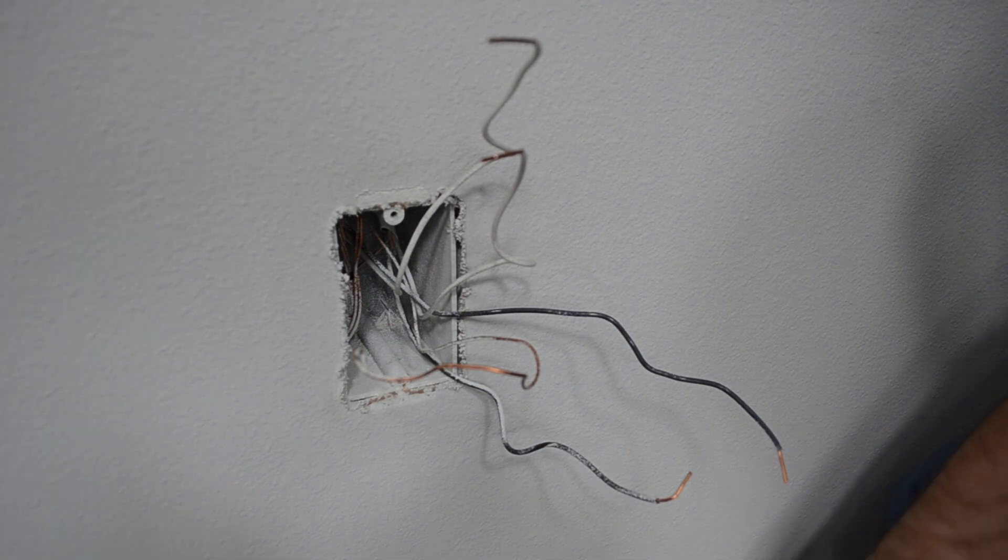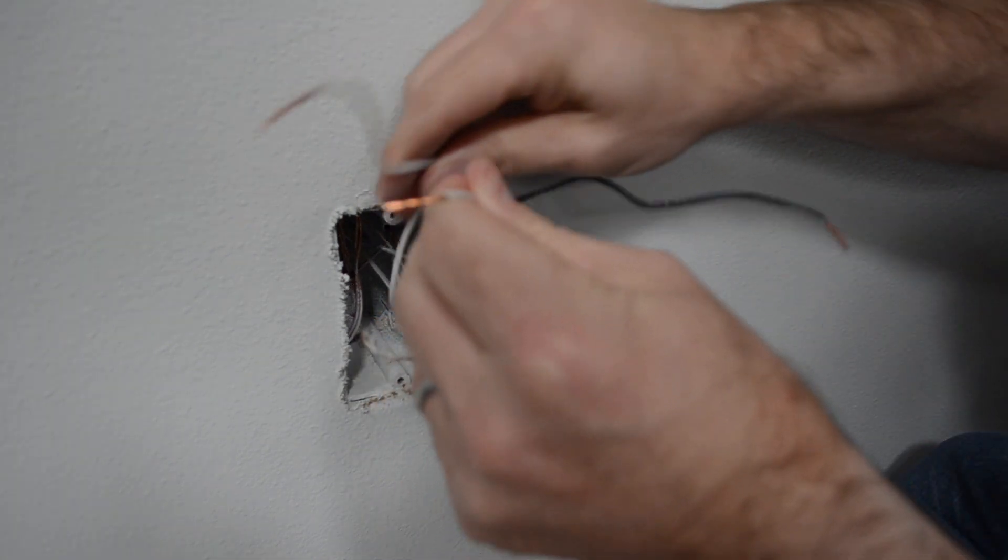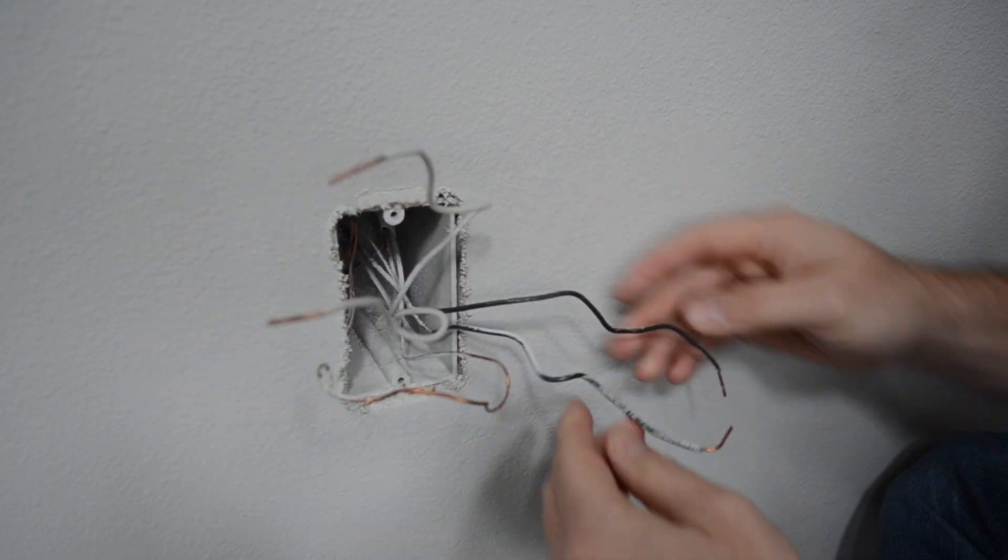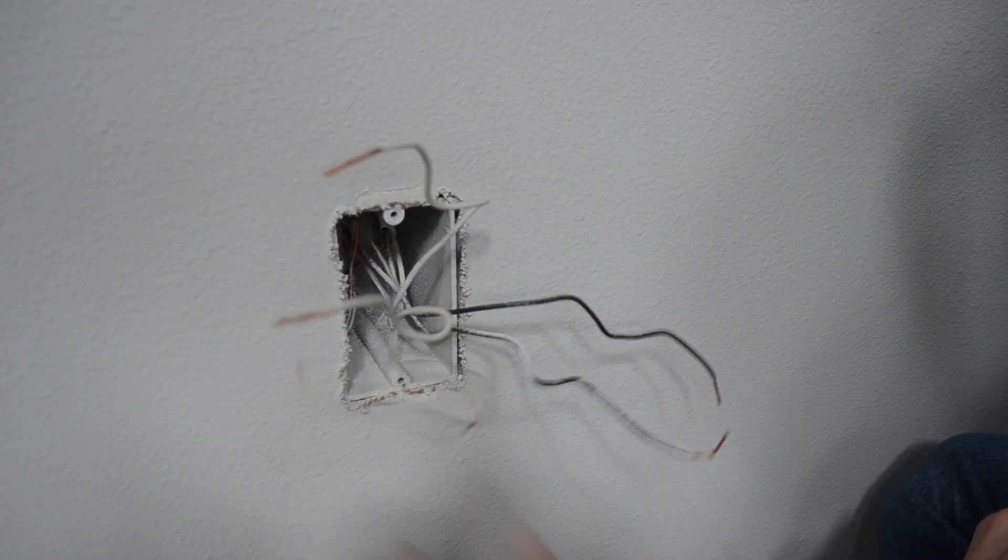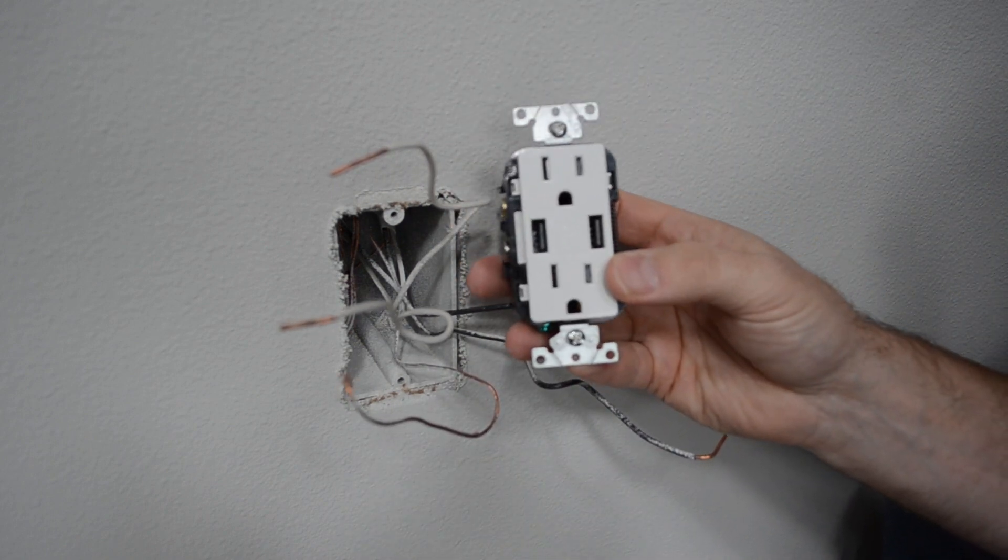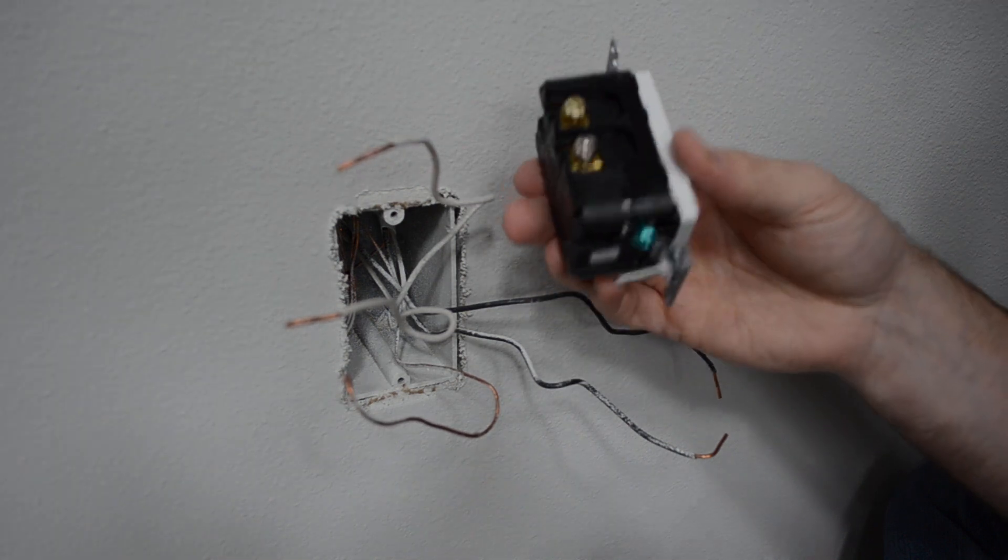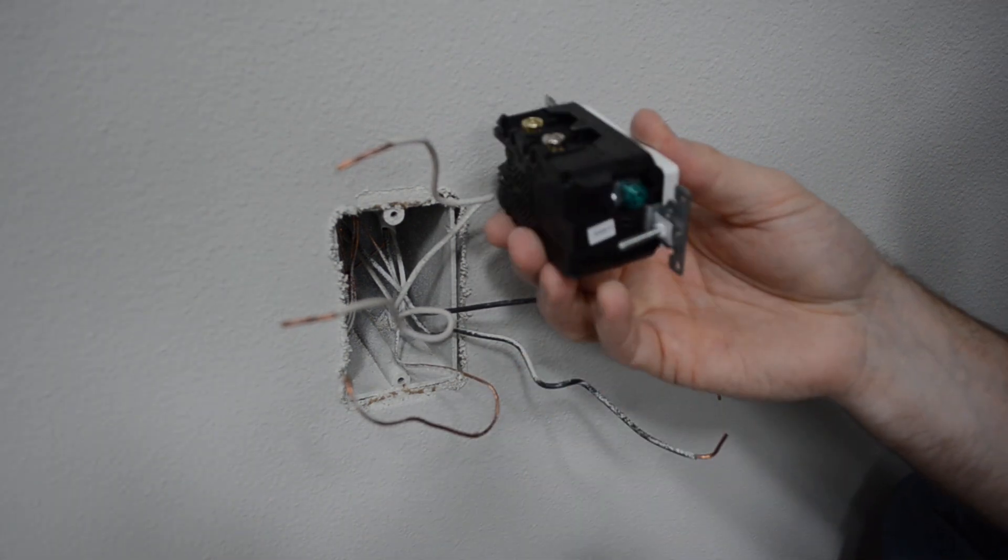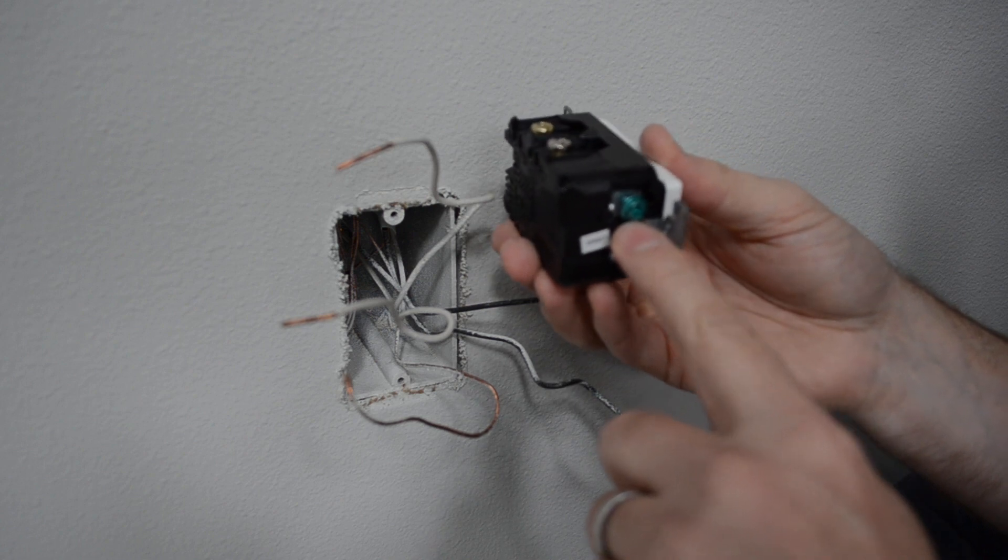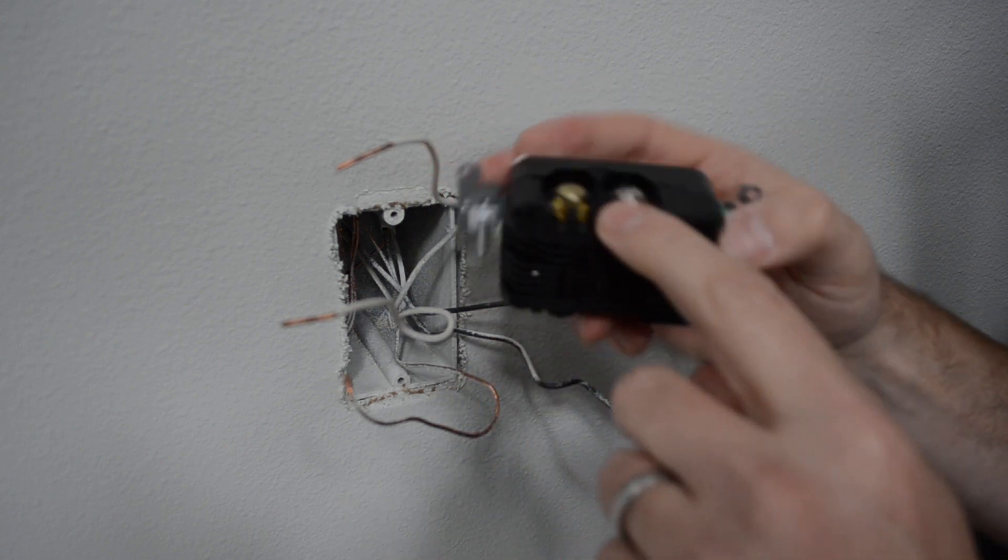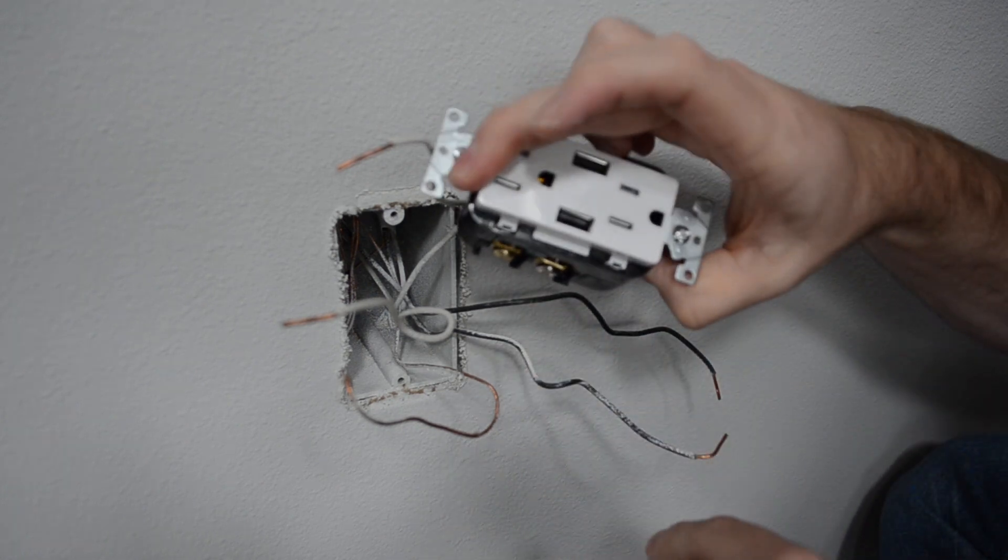Now we have a total of five wires. Two are white, two are black, and one ground. If you look on the new outlet, there is only three posts. The green one, as I just mentioned, is for the ground. And then there's these two posts here on the side of the outlet.